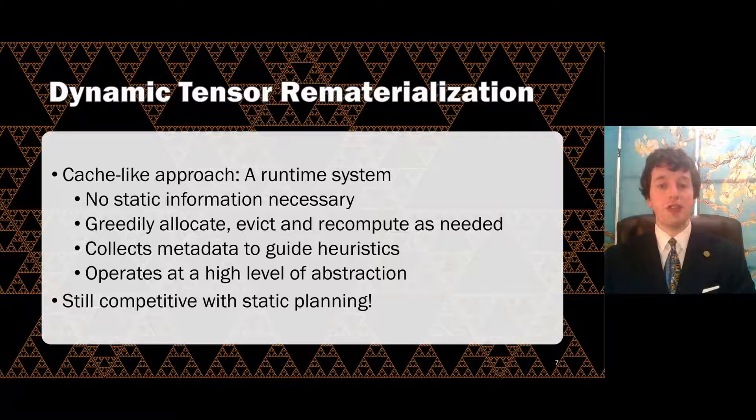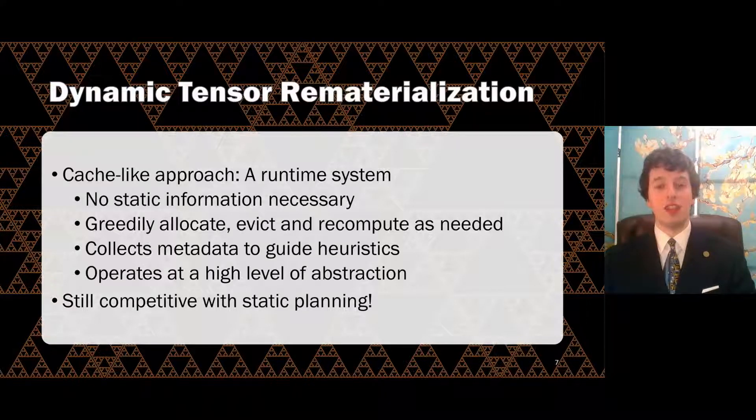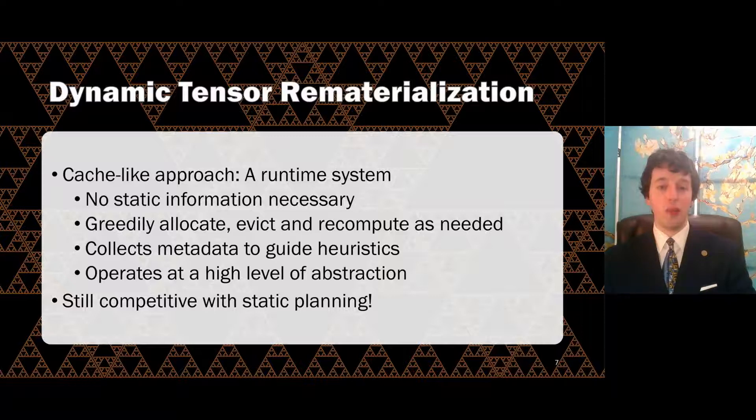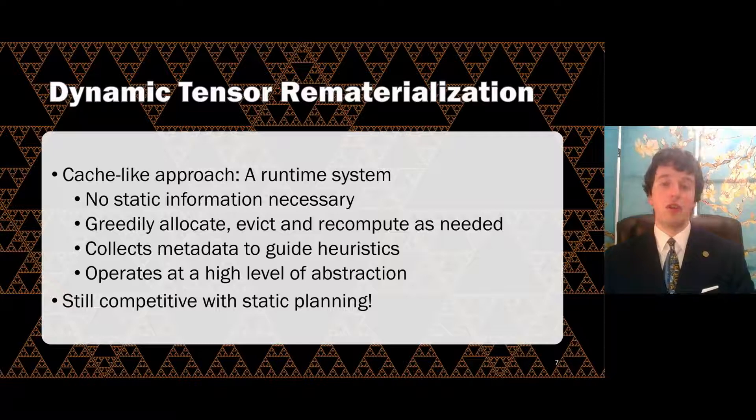DTR acts as a tensor-level cache that allows allocations to proceed as normal, intervening only when there isn't enough memory left. At that point, DTR uses a heuristic to choose tensors to evict from memory in order to make room. If an evicted tensor is later needed, DTR will recompute it on the fly. DTR can handle arbitrarily dynamic models, presents a simple interface that could be cleanly incorporated into deep learning frameworks, and, despite its conceptual simplicity, is still competitive with static approaches, with fairly limited overhead at runtime.